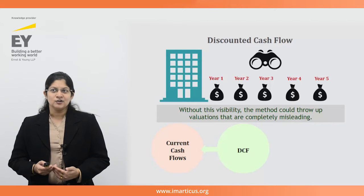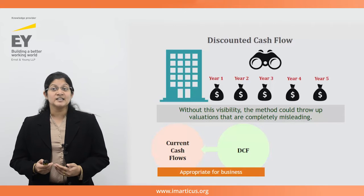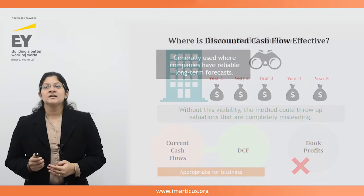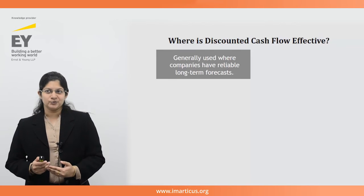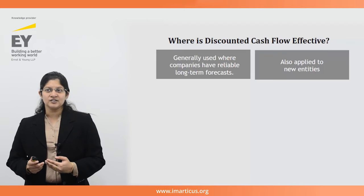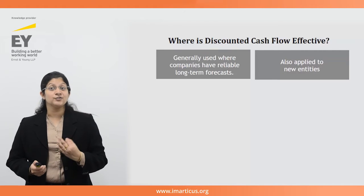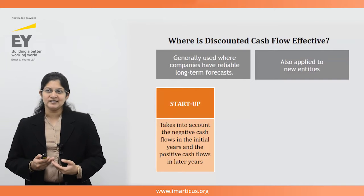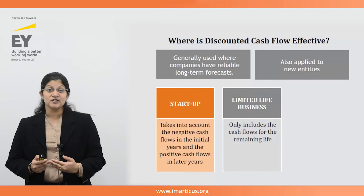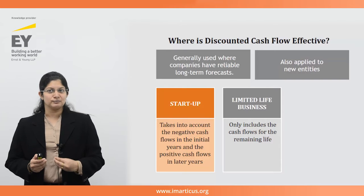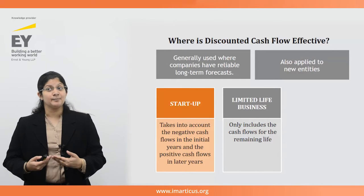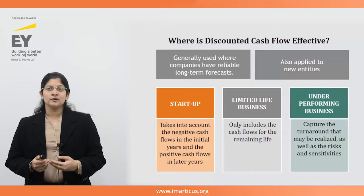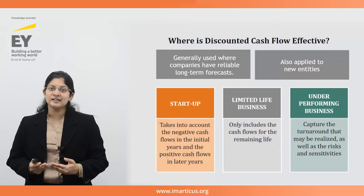The discounted cash flows method, based on estimating the current value of future cash flows, is appropriate for businesses based on cash flows and not book profits. The income approach is generally used where companies have reliable long-term forecasts, and also where there is no business history as the entity is completely new. It is particularly applicable in three scenarios: DCF is used in start-up businesses where only a DCF can effectively measure value, as it accounts for negative cash flows in initial years and then positive cash flows in later years. Limited life businesses such as mining projects also use DCF, as it includes cash flows only for the remaining life, whereas the market approach theoretically capitalizes earnings into perpetuity. Underperforming or loss-making businesses prefer the DCF method because it can capture the turnaround that may be realized over the next few years, as well as the risks and sensitivities.